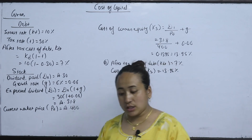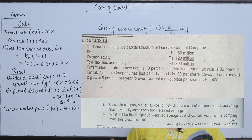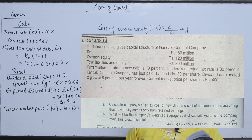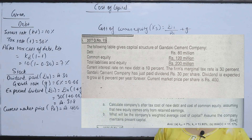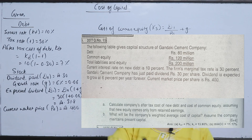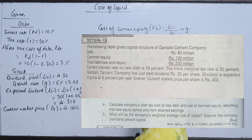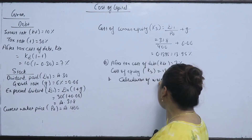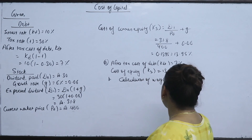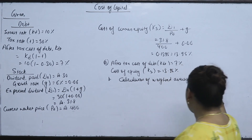Now the question asks: what will be the company's weighted average cost of capital (WACC), assuming the company maintains its present capital structure? Debt is 80 million and common equity is 120 million. We need to calculate WACC.